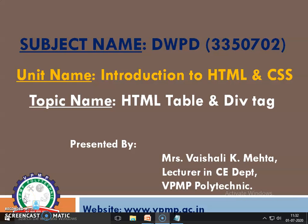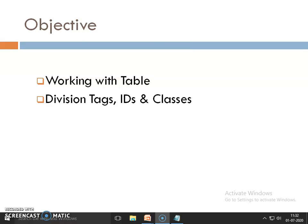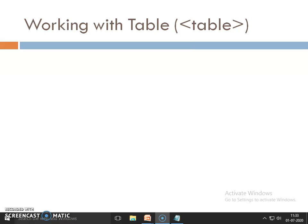Hello students, welcome to my online DWPD lecture session. Today we will continue our unit number one, introduction to HTML and CSS, and my topic is HTML table and division tag. Today I am going to discuss about the table tag and different attributes of tables. We will also discuss the division tag, which uses two types of special attributes: IDs and classes. So let's start with the table tag.